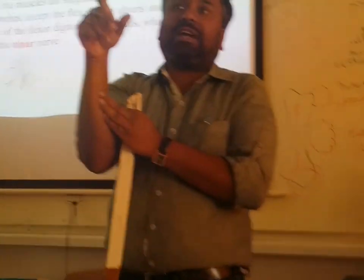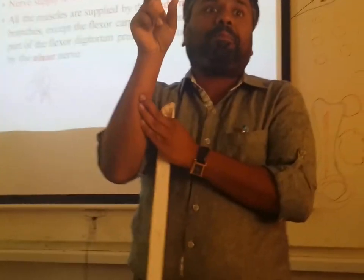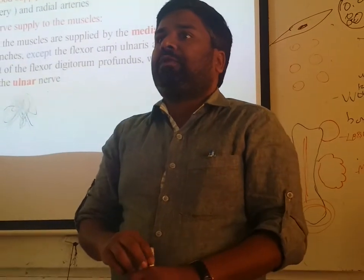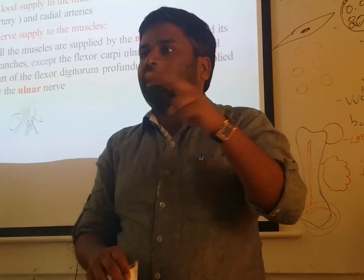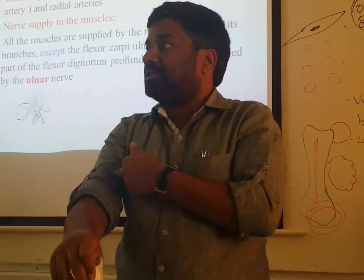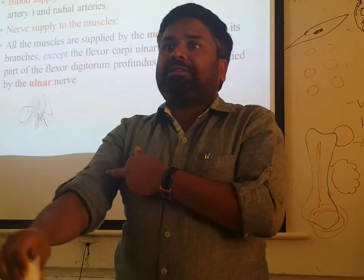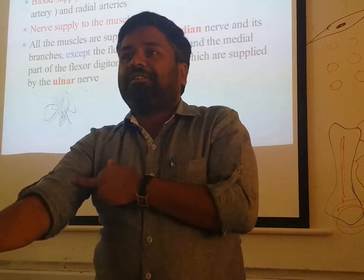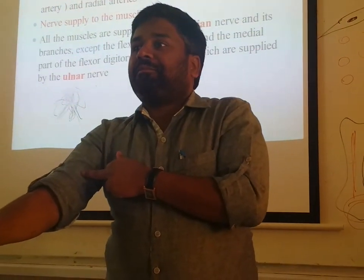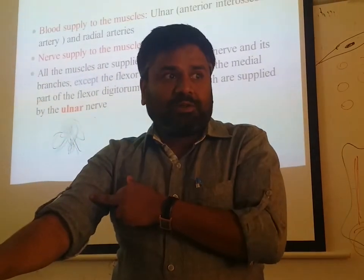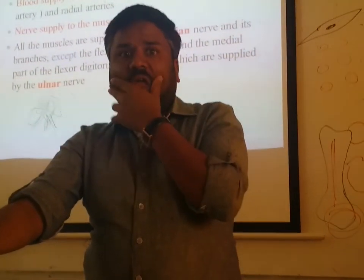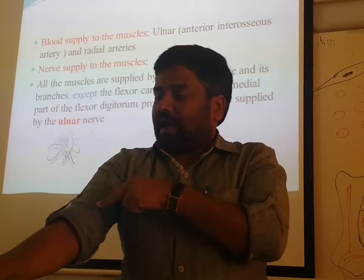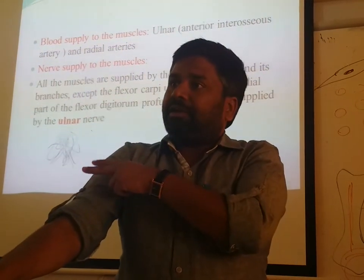The medial half of flexor digitorum profundus is supplied by the ulnar nerve, and the lateral half by the median nerve. For comparison, brachialis has dual nerve supply: the lateral half by the radial nerve and the medial half by the musculocutaneous nerve — the nerve of the anterior compartment.